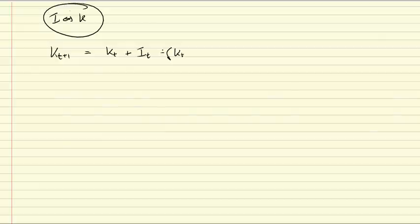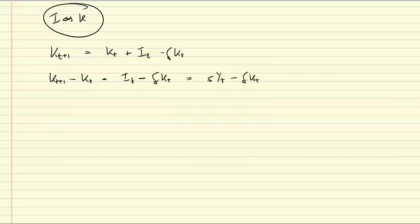We can now rewrite this as kt plus one minus kt equal to i t minus delta kt. So that we have here on the left-hand side the change in the capital stock from period kt, from period t to period t plus one. Now, we can further write, since we know that i t is equal to a constant fraction of output, we can write i t as s y t minus delta kt.